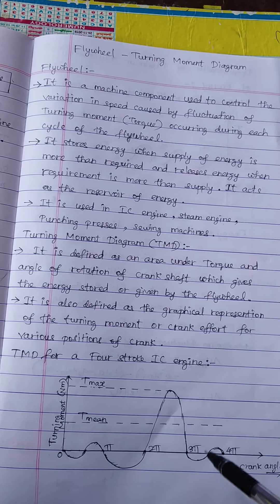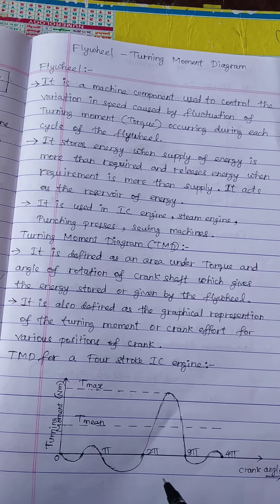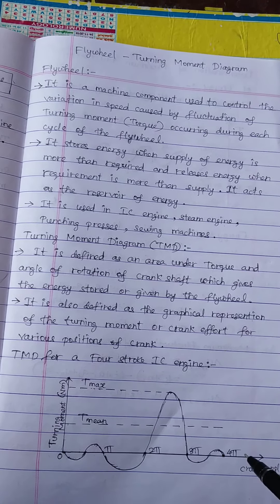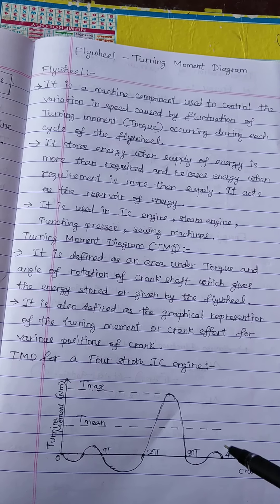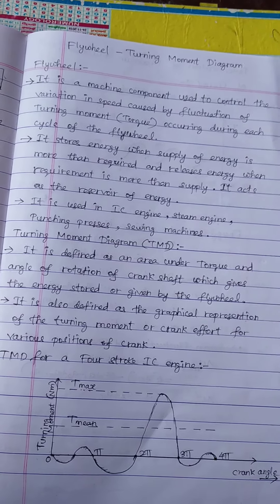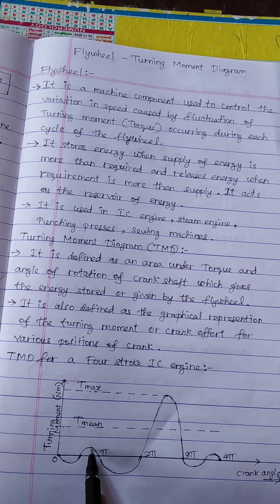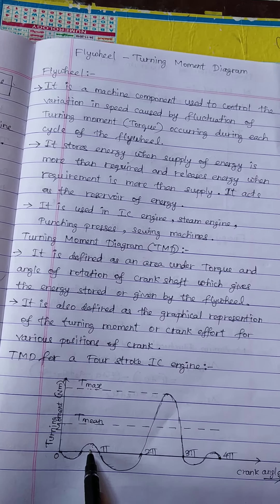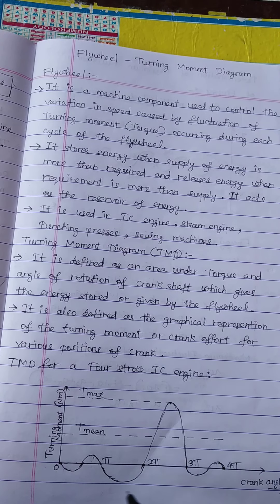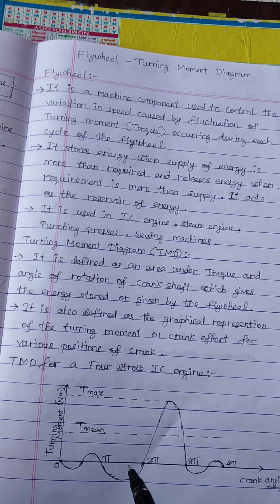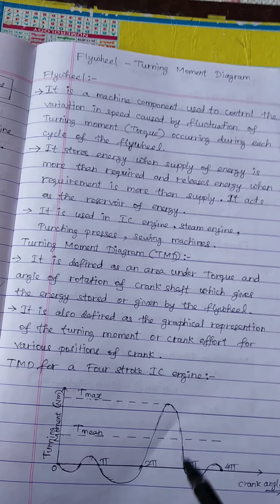Here, except the power stroke, for all other strokes we have a negative loop, because in these strokes the work is done on the gases. In the power stroke, the work is done by the gas, that is why we have a positive loop here. In the suction stroke also we have some positive loop, and in the exhaust also we have a positive loop. But in the compression stroke we don't have any positive loop because in compression the whole work is done on the gases — that is why it has a larger negative loop.